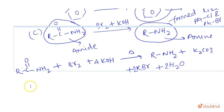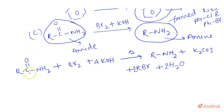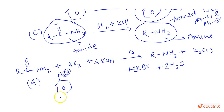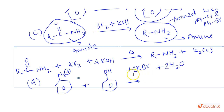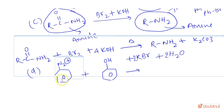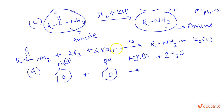The coupling reaction is a special type of reaction involving benzene diazonium salt. It is a very special reaction and can be used to identify amines. When PhN2+ (benzene diazonium salt) is made to react with phenol, a dye is formed.